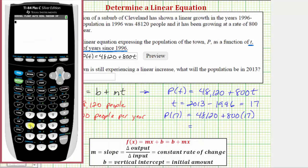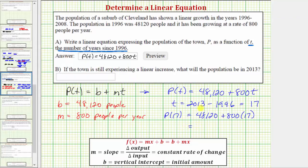So we have 48,120 plus 800 times 17, which equals 61,720. So P(17) equals 61,720 people.